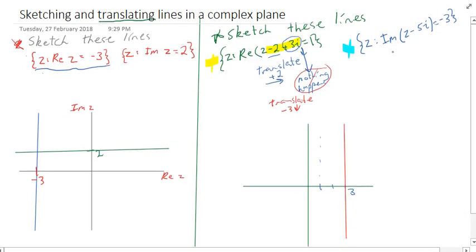Okay. Now, this one's a bit of a no-brainer. Z imaginary z minus 5i equals negative 3. Alright. So it's imaginary, so it's going to be a horizontal line. Passing through negative 3, at least I think at the moment, that's what would normally happen.